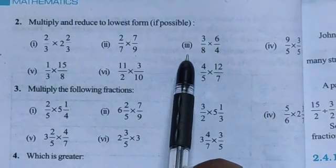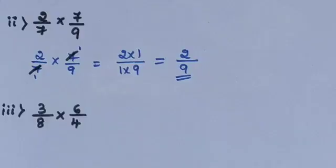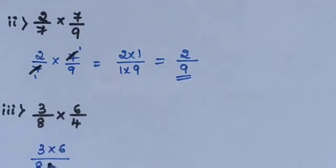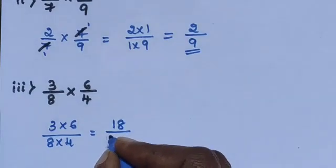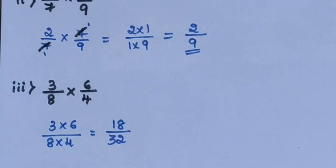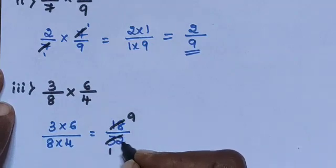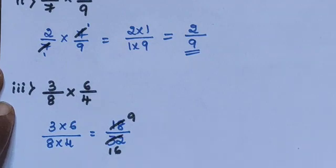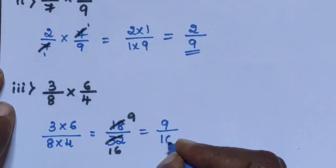Next, sub-question 3: 3/8 multiplied by 6/4. Directly multiply 3×6 divided by 8×4, which is 32. 2 nines are 18. The answer is 9/11.